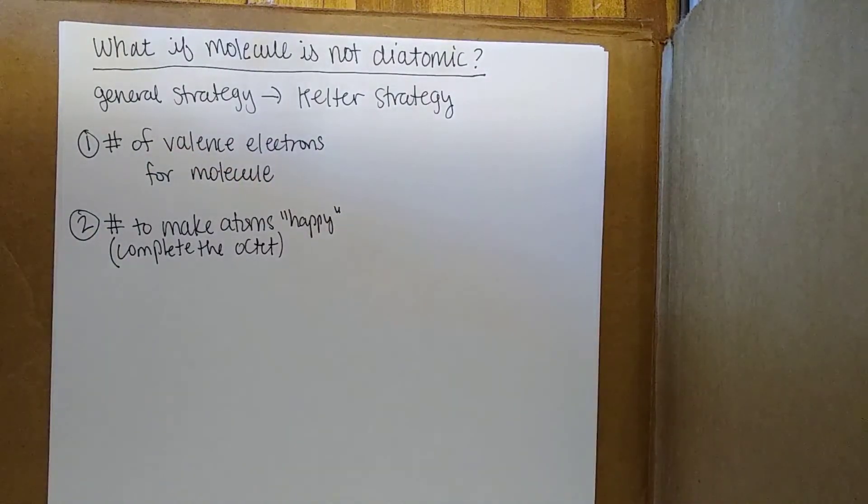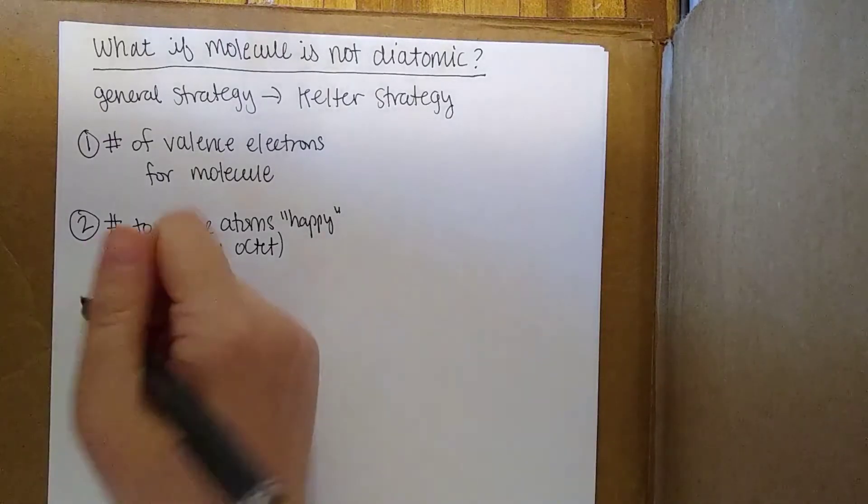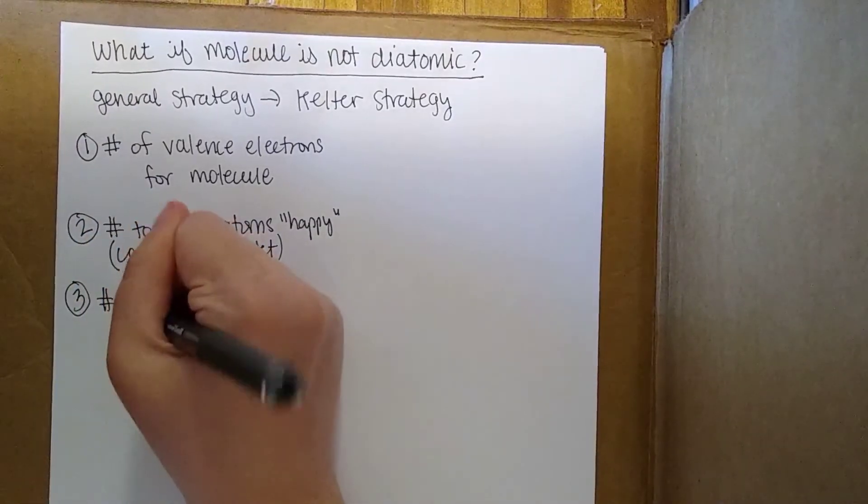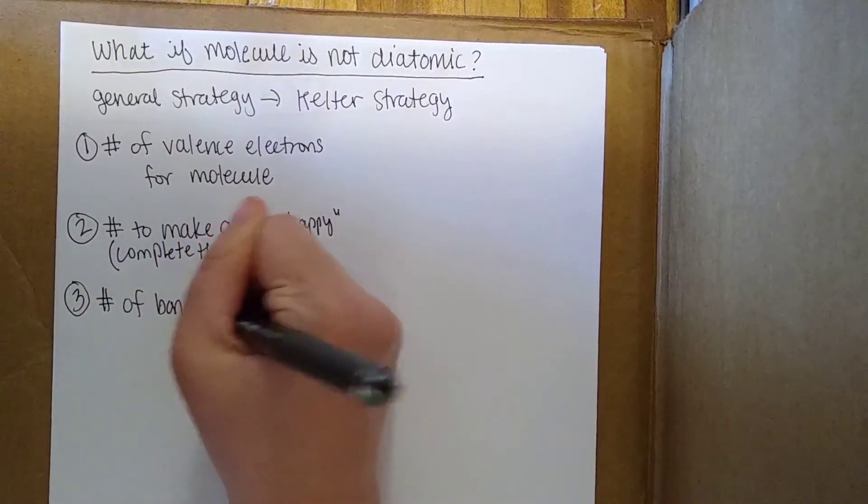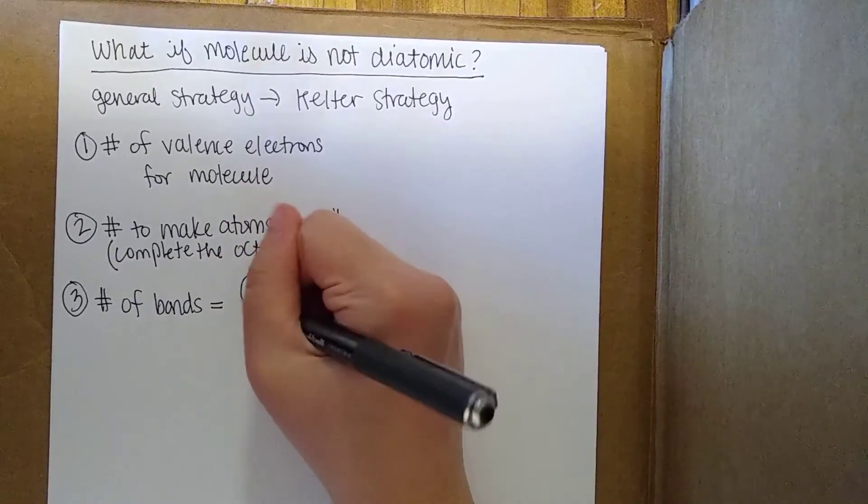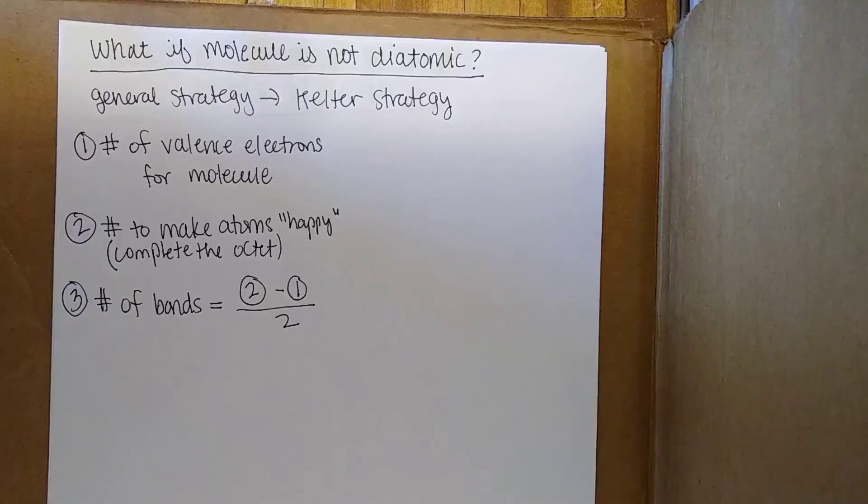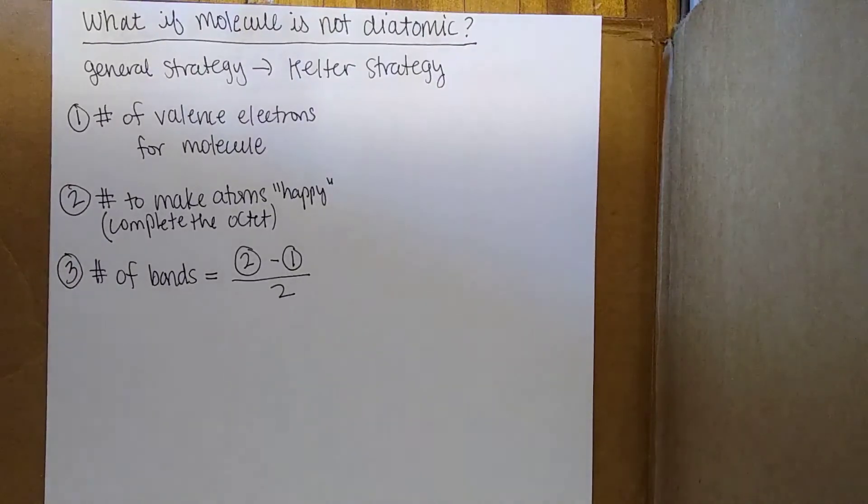Most of the time we're going to be dealing with an octet. There are some exceptions I'll talk about in another video. The next thing we need to do, step 3, is we are going to look at the number of bonds. So the difference between step 2 and 1 divided by 2 is the number of bonds. This is equal to step 2 minus step 1 divided by 2.